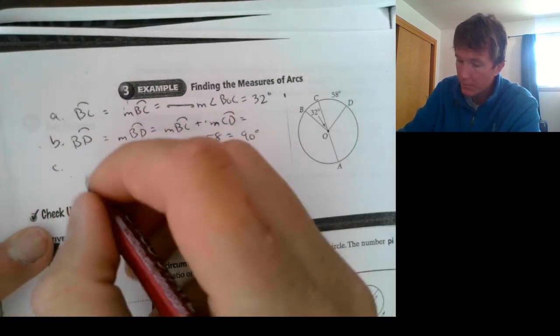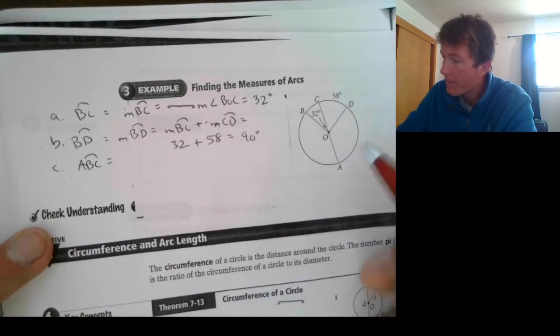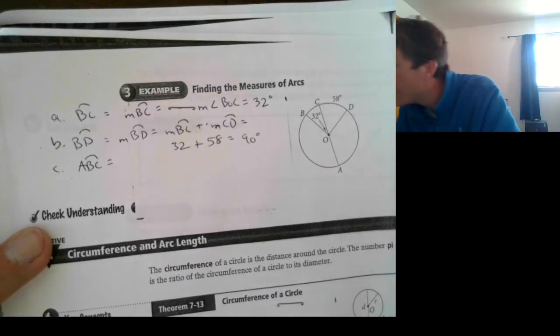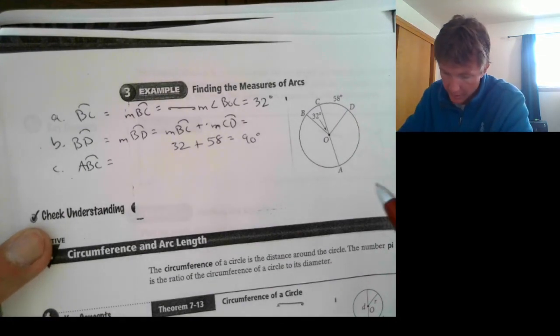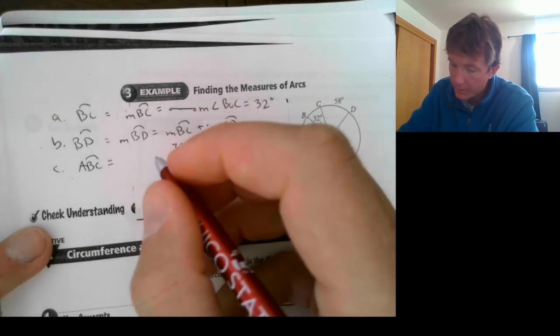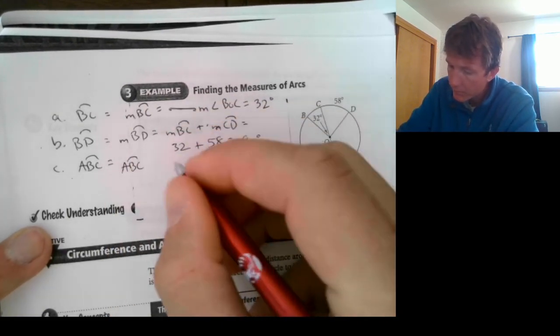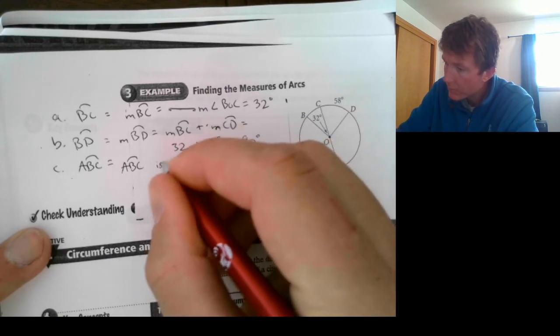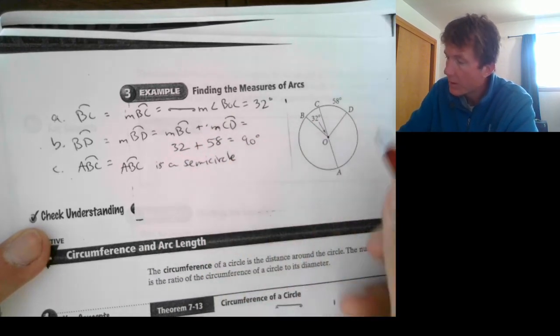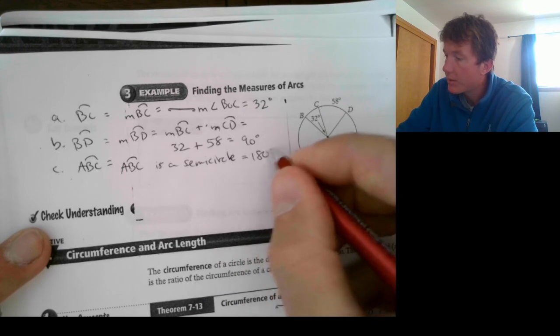Next, we'll find the measure of arc ABC. So, let's look at that. ABC. Okay, this is a big one. I can see that ABC is a semicircle. So, ABC is a semicircle. So, how many degrees are in a semicircle? 180 degrees.